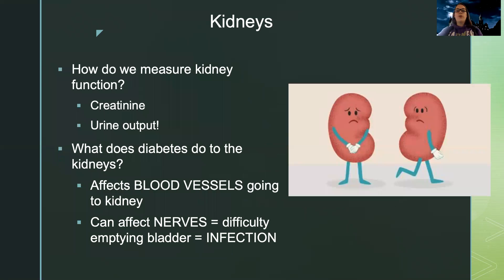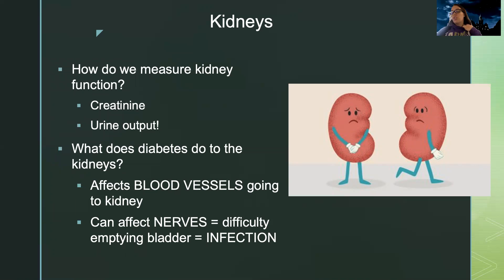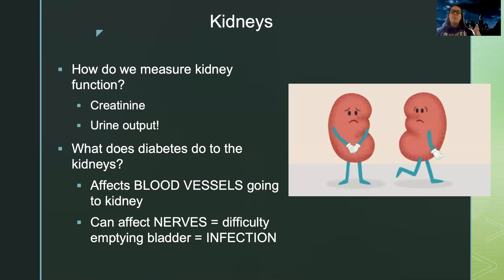We want to take a good look at the kidneys. We look at labs — creatinine can tell us how well the kidney is functioning and whether they're clearing things properly. An important thing to monitor is their urine output, as that tells us a lot about kidney function. Diabetes can affect the blood vessels going into the kidneys and irritate them, but it can also affect the nerves going to the bladder — what's called a neurogenic bladder. Those signals that tell the bladder it's time to empty stop working, so urine just sits in the bladder, putting the patient at higher risk for infection.